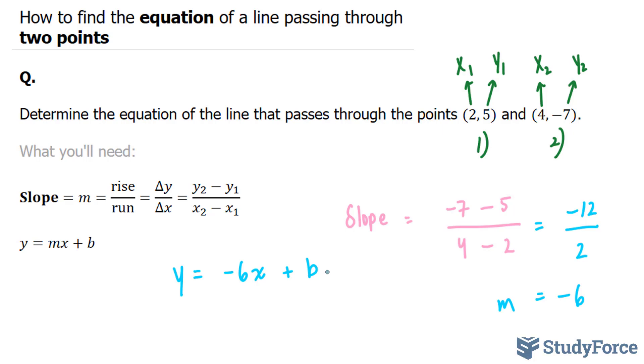I'm almost done. All I need to find is my b value. But how do I do that? Remember the two points that they gave you, this point and this point? You can choose any one of those two points, and usually I like to choose the one where the numbers are smaller, but it doesn't matter. I'm going to choose this set right here, two and five.